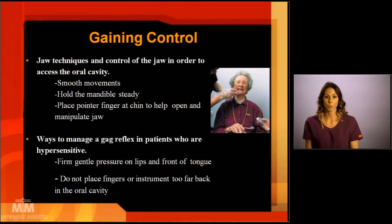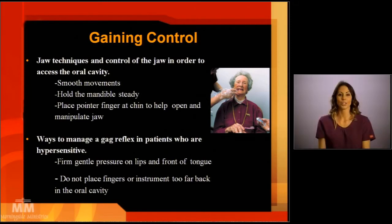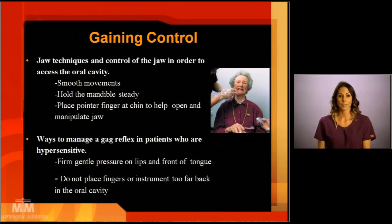One very important aspect of oral care when building trust is that you would like to have control of the jaw or the tongue. Jaw techniques and control of the jaw consist of smooth movements, holding the mandible, which is the lower part of the jaw. Then place your pointer finger on the chin to help open the jaw.